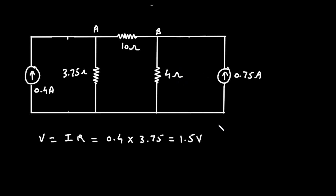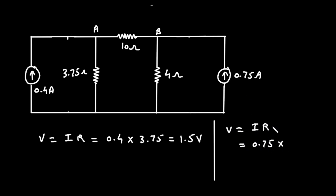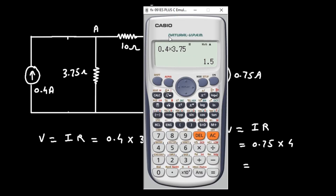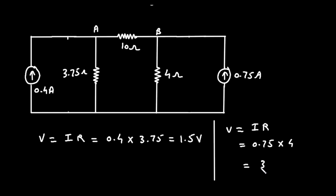Similarly, for the second current source, V is equal to I into R. The current value is 0.75 and the resistance is 4 ohm, so 0.75 into 4 equals 3 volt.